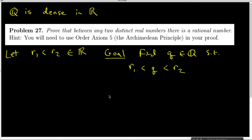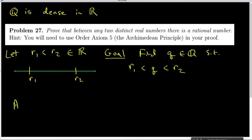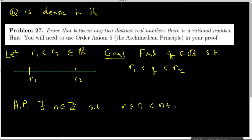We don't have much of a hypothesis to start with. All we really have is this inequality, and I'm going to draw that on a number line with R1 and R2 marked. I'm told that the Archimedean principle is going to be useful. The Archimedean principle says that there exists an N inside the set of integers such that N is less than or equal to R1, and R1 will be less than N plus 1.